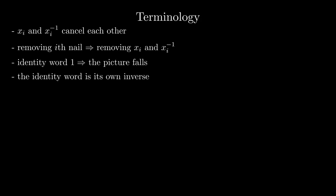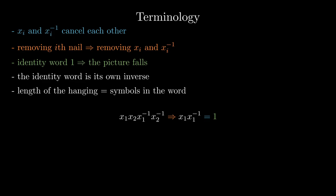The identity word 1 means that the picture falls. Moreover, the identity word is also its own inverse. We will call the length of the hanging as the number of symbols in the word. Now let's go back to the answer for the two-nail puzzle and analyze it a bit more. Let's see what happens if we remove the second nail. Using the newly introduced terminology, we will obtain the identity word, thus the wanted result. I will let you figure out what happens if we remove the first nail. It is very similar.